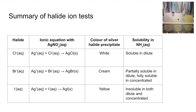The solubility in aqueous ammonia allows you to distinguish between the halides, especially where precipitate colours are very similar. If you're unsure whether a precipitate is white or cream, add dilute aqueous ammonia — if it dissolves, it's chloride. If it only partially dissolves, it's not chloride. Add concentrated aqueous ammonia: if it fully dissolves, it's bromide; if it doesn't dissolve at all in the concentrated ammonia, it's iodide.